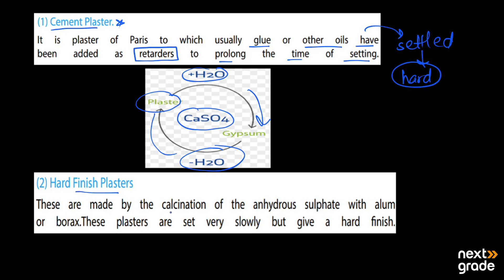Here we have the hard finish plasters - this is the second type of plasters. These are made by the calcination of anhydrous sulfate with alum or borax. These plasters set very slowly but they give a very hard finish. This way we can use them to fill cavities in a better way.